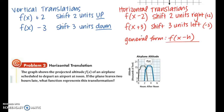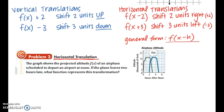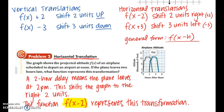In example 2, the graph shows the projected altitude f(x) of an airplane scheduled to depart at noon. If the plane leaves two hours late, a two-hour delay means the plane leaves at 2 PM, which shifts the graph to the right two units. Because we're shifting two units to the right, the function f(x minus 2) represents this transformation. The y values of the delayed flight correspond to x values two hours earlier — the altitude doesn't change even if the plane leaves later, just the time changes.